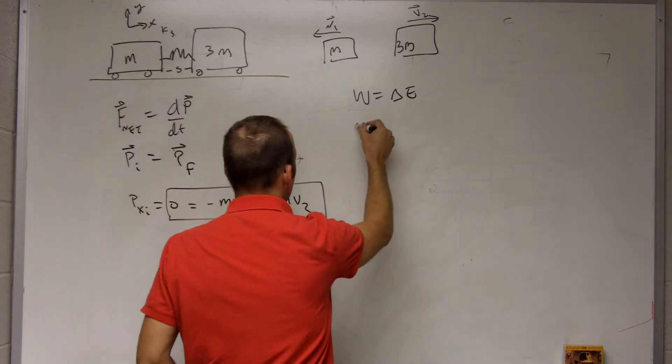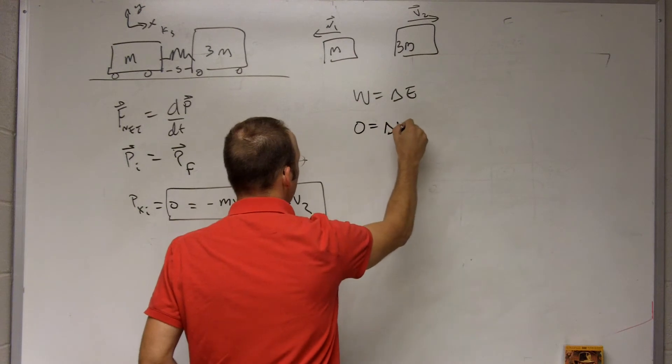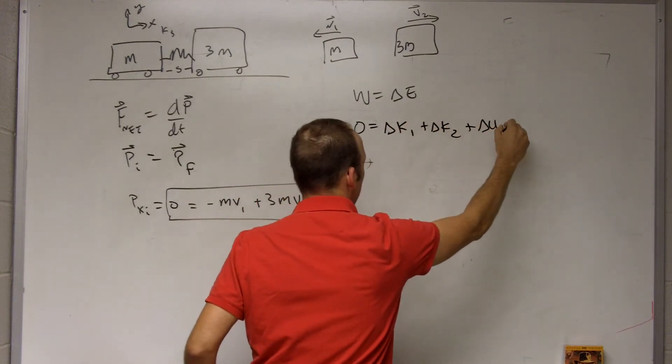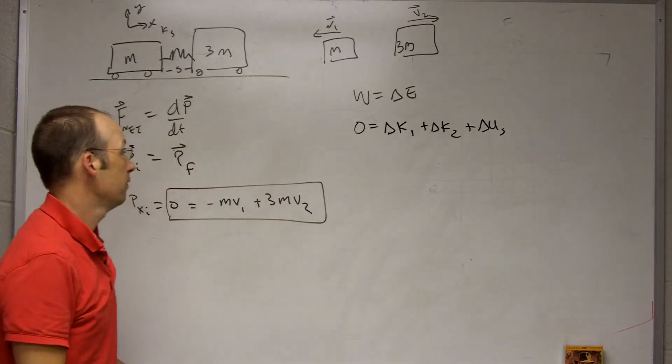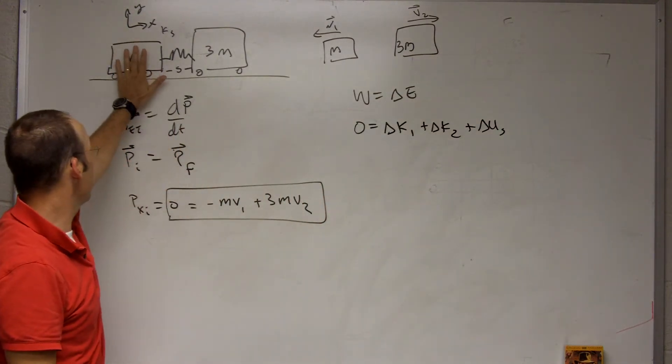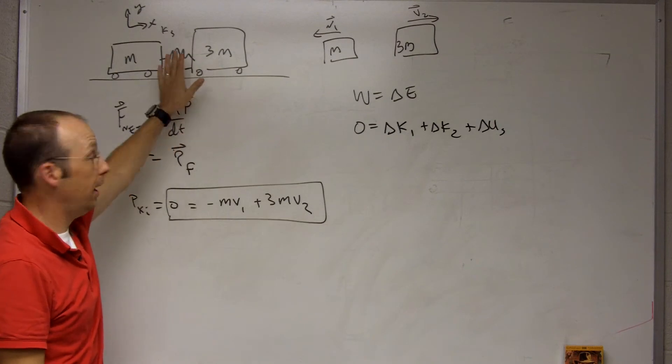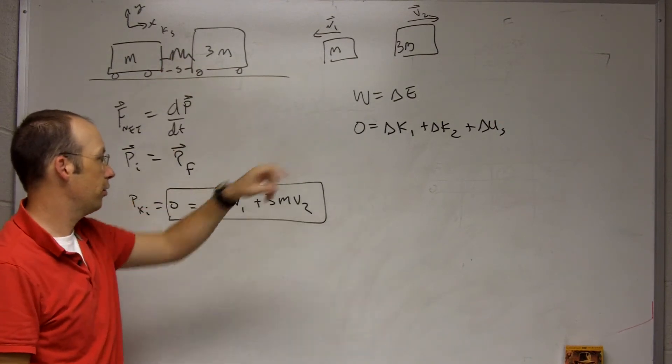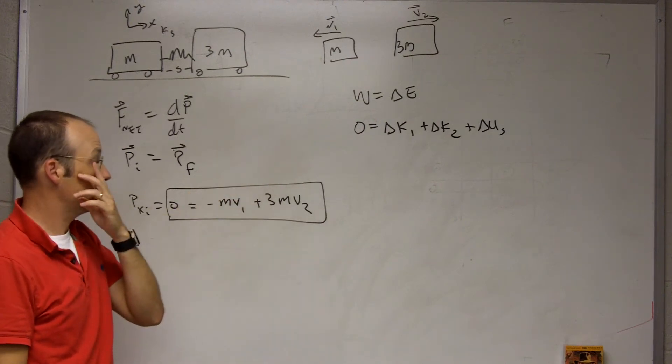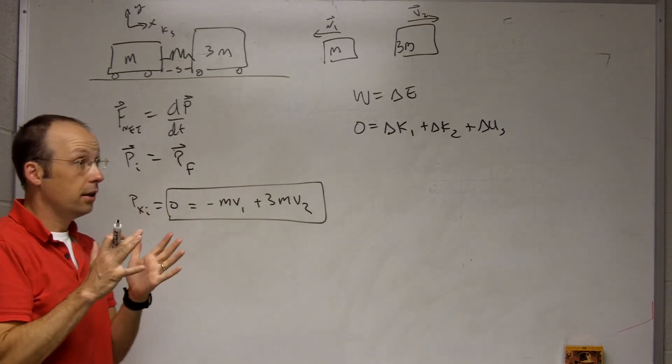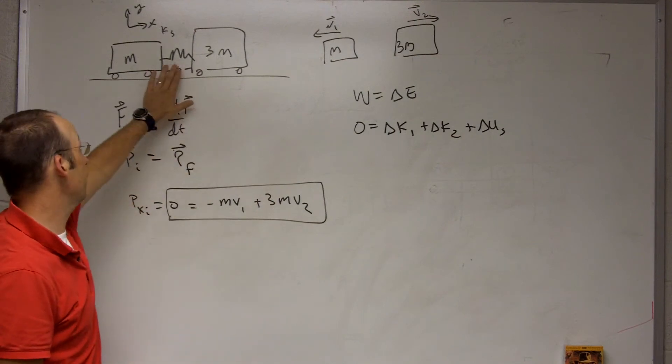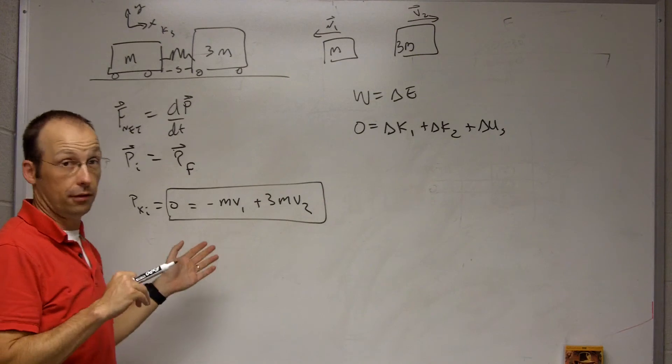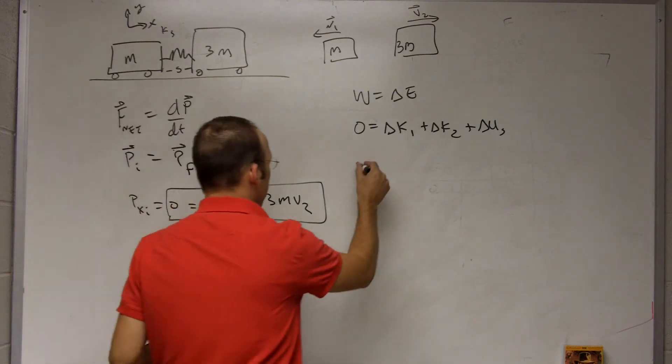So I can write this as zero equals delta K1 plus delta K2 plus delta U_spring. Because I can have kinetic energy for this, kinetic energy for that, and energy stored in the spring. Here, one and two are the objects, the mass one and mass two. Initially, there's no kinetic energy, but there is spring potential energy. And at the end, there's kinetic energy, but not spring potential energy.